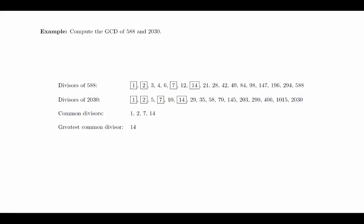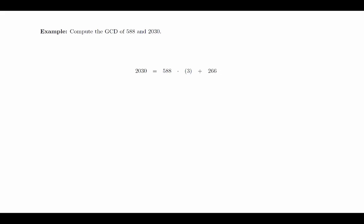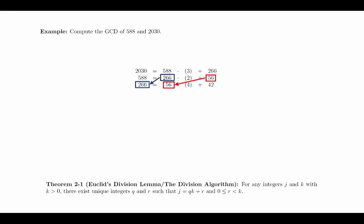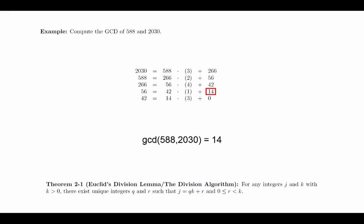Before launching into the proof of the Euclidean algorithm, we will look at a numerical example to build some experience and intuition. Compute the GCD of 588 and 2030. We can do this by simply finding all of the factors of 588 and 2030 and then picking the largest number that appears in both lists. But this turns out to be a very inefficient process, especially as the numbers get larger. So instead, we will use the Euclidean algorithm. We begin by dividing the larger number by the smaller number to get a quotient and a remainder, and write this result in the form given by the division algorithm. We shift everything over and repeat this process using the old divisor as a new dividend and the old remainder as a new divisor, continuing until we don't have a remainder. The last non-zero remainder turns out to be the greatest common divisor.